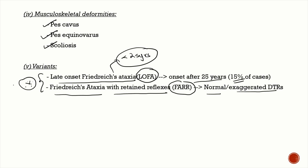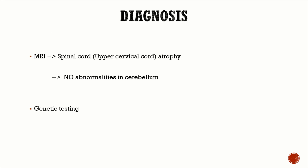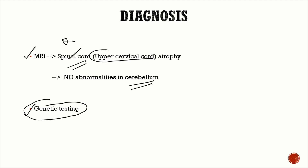Diagnosis is primarily clinical and confirmed by genetic testing. On MRI, the cerebellum is relatively normal with no significant abnormalities. The main pathology is seen in the spinal cord, dorsal root ganglia, and peripheral nerves. MRI characteristically shows predominant spinal cord atrophy, more specifically upper cervical cord atrophy.